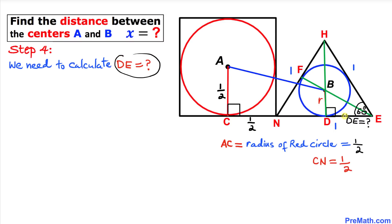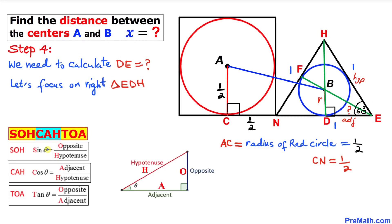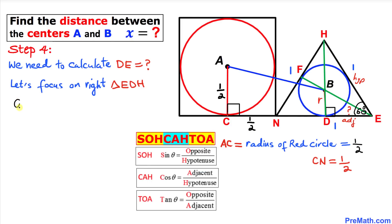In this next step we calculate the distance DE by focusing on right triangle EDH. In this triangle the angle is 60 degrees, the hypotenuse is 1, and we want to find the adjacent side DE. Using our SOH-CAH-TOA table, since we have hypotenuse and adjacent, we use cosine: cosine equals adjacent over hypotenuse. So cosine of 60 degrees equals DE divided by 1.